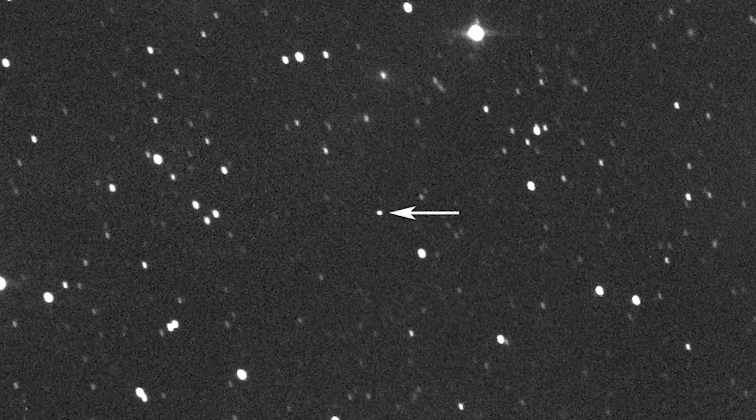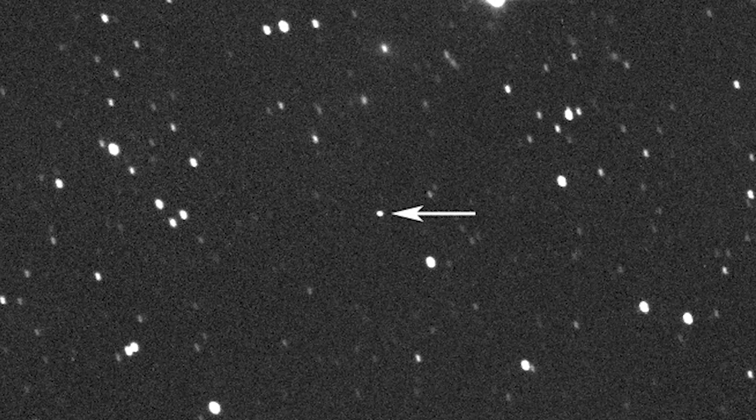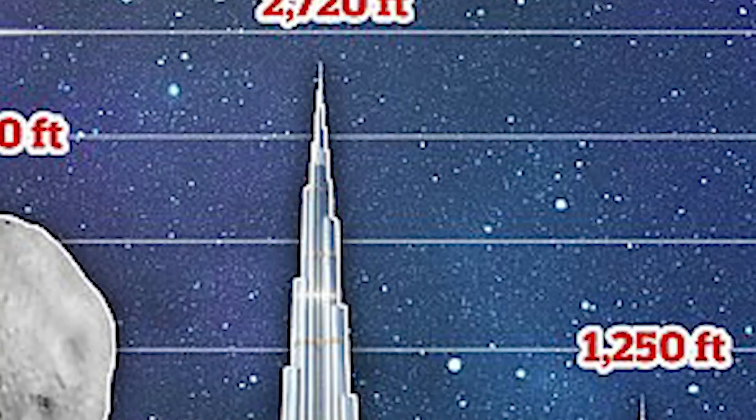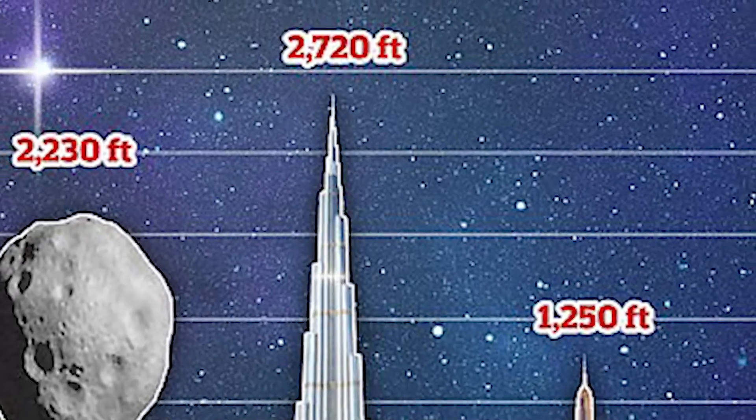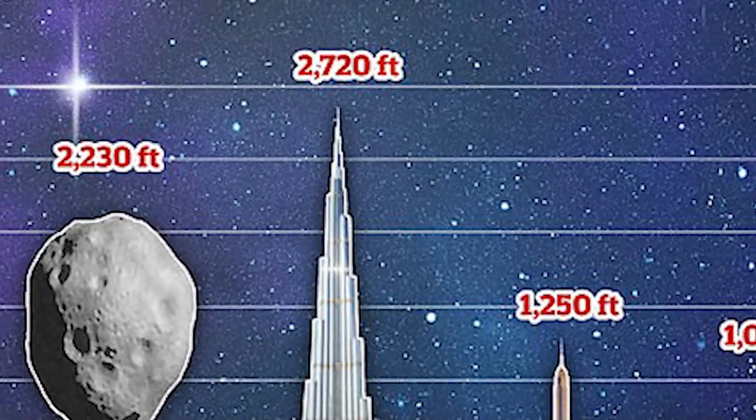More recently, in 2021, we had asteroid 2001FO32, about 900 meters in size, cruise by Earth. It was 2 million kilometers away, which sounds like a lot, but in space terms, it's pretty close.